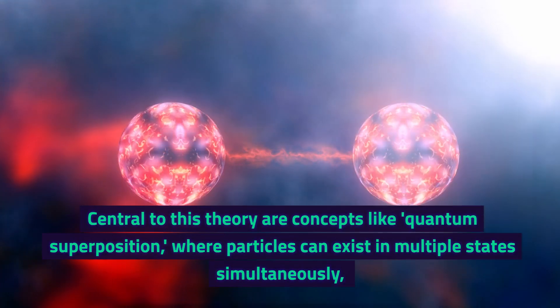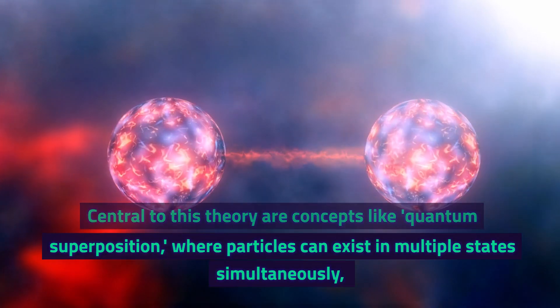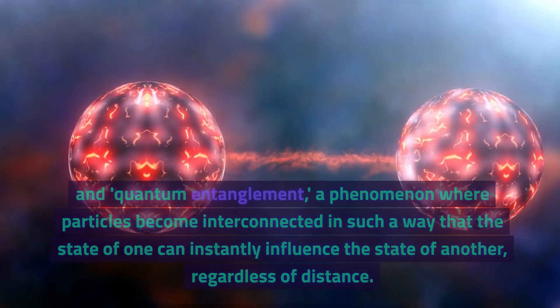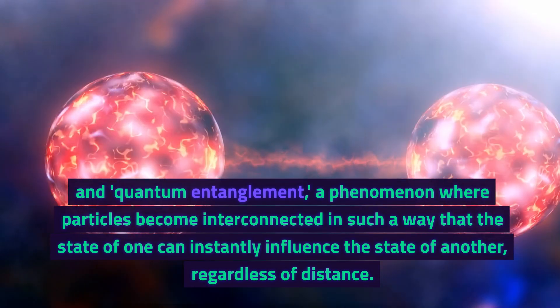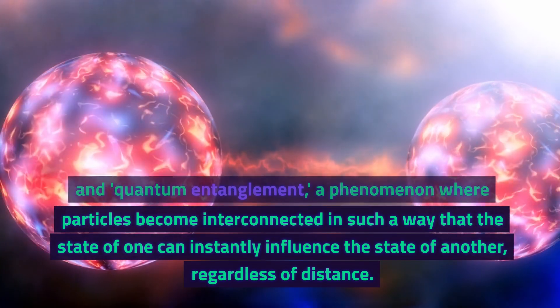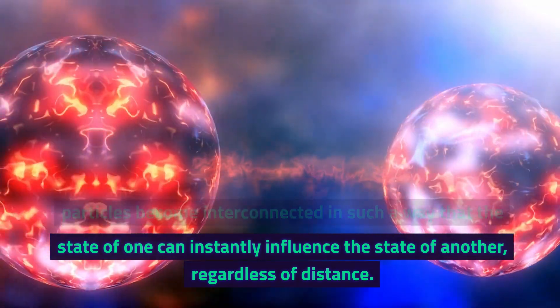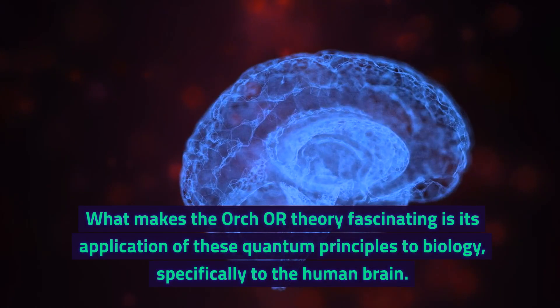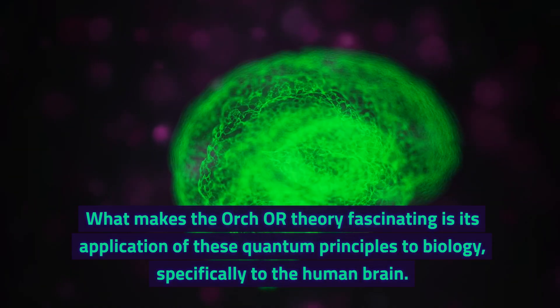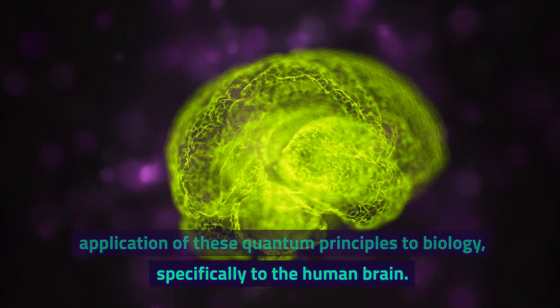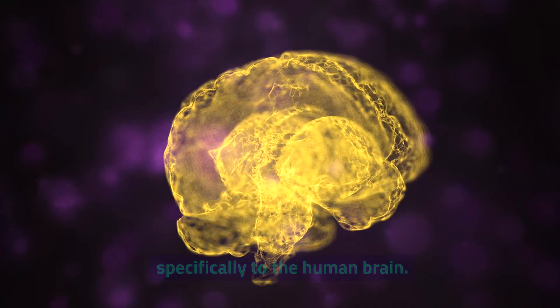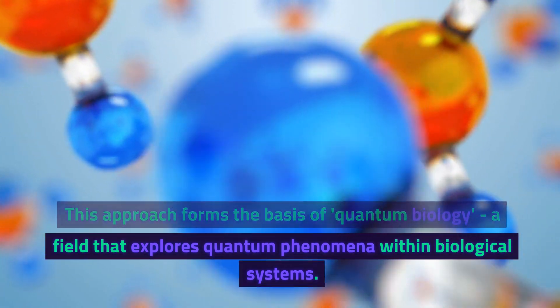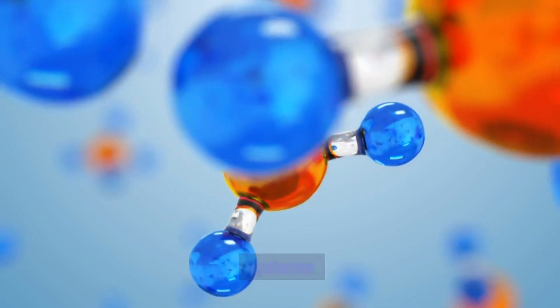Central to this theory are concepts like quantum superposition, where particles can exist in multiple states simultaneously, and quantum entanglement, a phenomenon where particles become interconnected in such a way that the state of one can instantly influence the state of another, regardless of distance. What makes the Orch OR theory fascinating is its application of these quantum principles to biology, specifically to the human brain. This approach forms the basis of quantum biology, a field that explores quantum phenomena within biological systems.